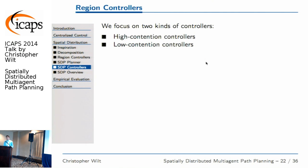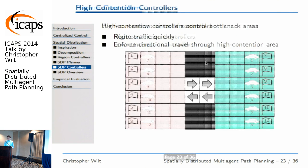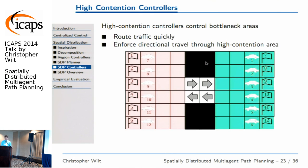In the paper we focus on two kinds of controllers: high contention controllers, which are in charge of bottleneck-type regions, and low contention controllers, which are in charge of regions with less traffic and fewer agents. For a high contention bottleneck area, we simply enforce directional traffic to ensure that mobile units keep moving quickly and efficiently through the high contention area. This isn't necessarily the optimal policy, but it guarantees that mobile units are at least moving rather than creating a traffic jam.